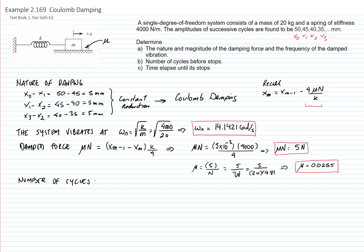To calculate the number of cycles before the system stops, we will use the following equation. Please look at the theory. And this will be equal to the initial amplitude minus mu times n divided by k, all that divided by 4 mu n over k.